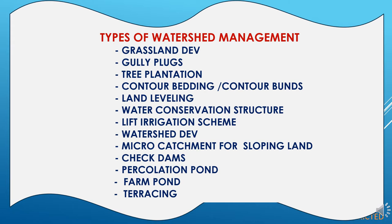Now we will study the types of watershed management. It can be categorized in many ways, including grassland development, gully plugs, tree plantations, contour bedding or contour bunds, land leveling, water conservation structure construction, lift irrigation schemes, watershed development, micro catchments for sloping lands, check dam construction, percolation ponds, farm ponds, and terracing. These are the various means of watershed management.